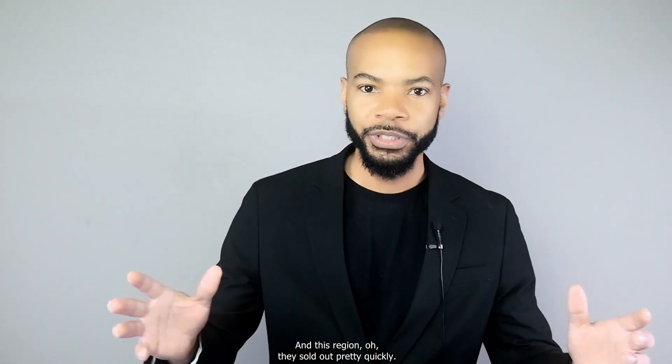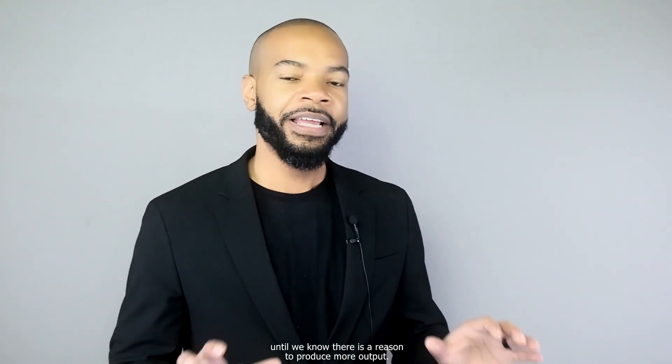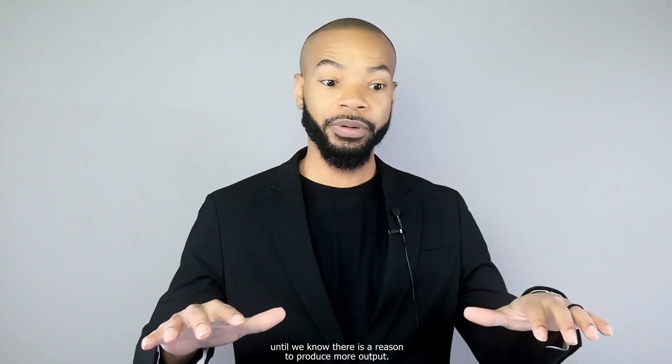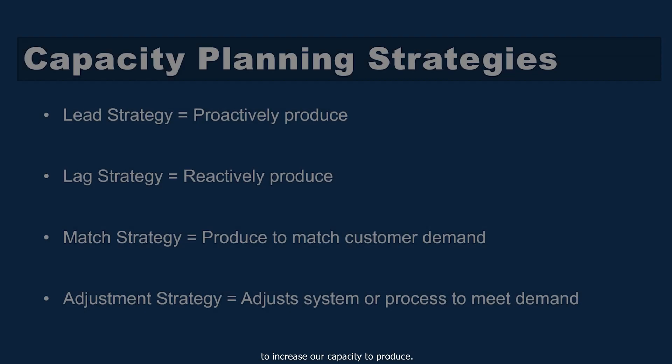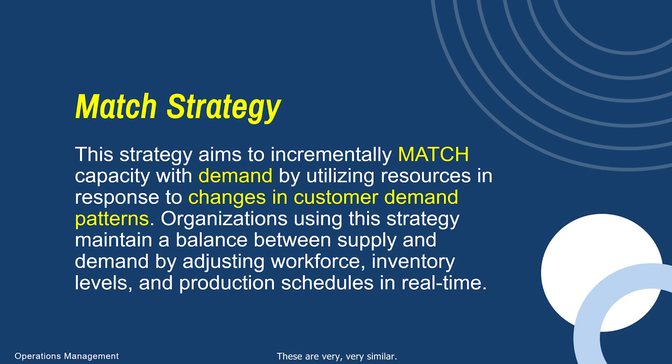With a lag strategy, a company might produce 25,000 units in a region, see they sold out quickly, then produce 35,000 next time — it's a reactive approach. Remember: lead is proactive, we know these things are going to sell so we produce to the max. Lag is reactive — we're not going to maximize capacity until we know there's a reason to produce more output. As we see that increase in demand, we begin to increase our capacity to produce.